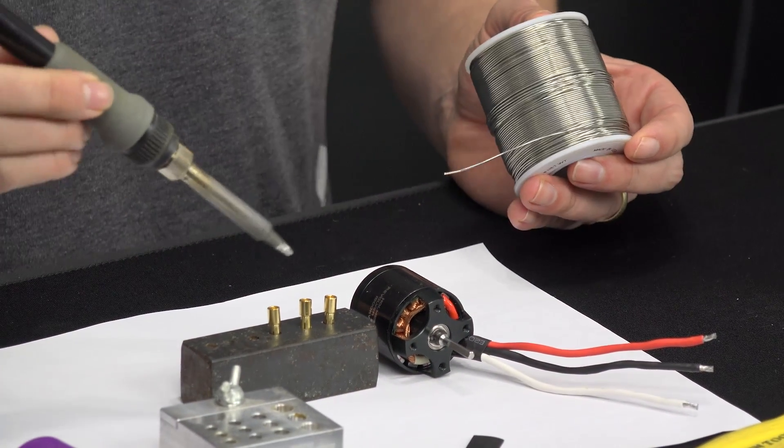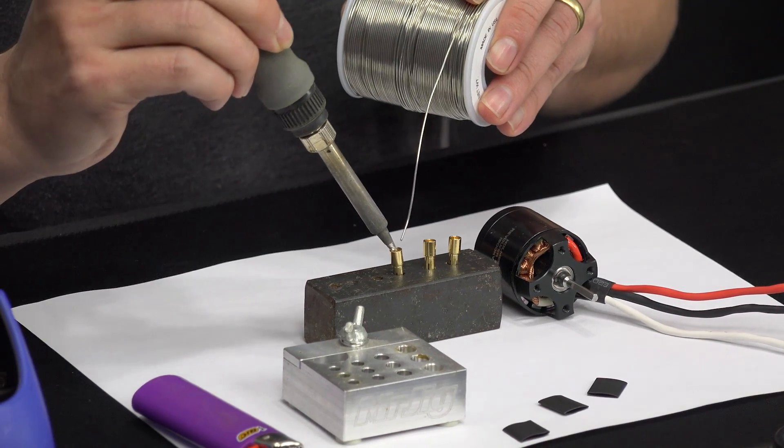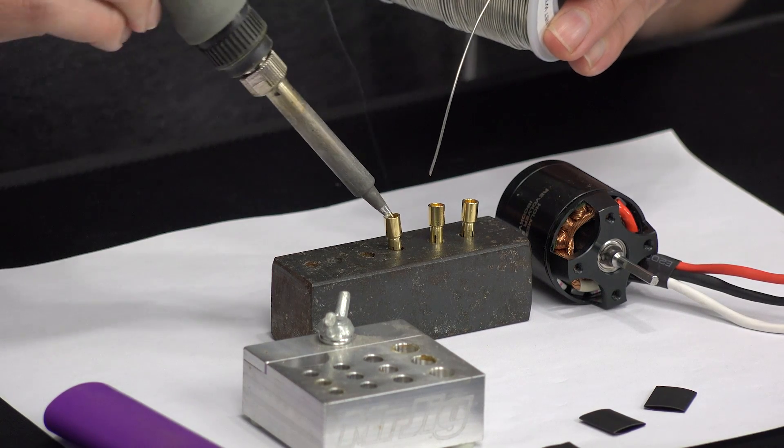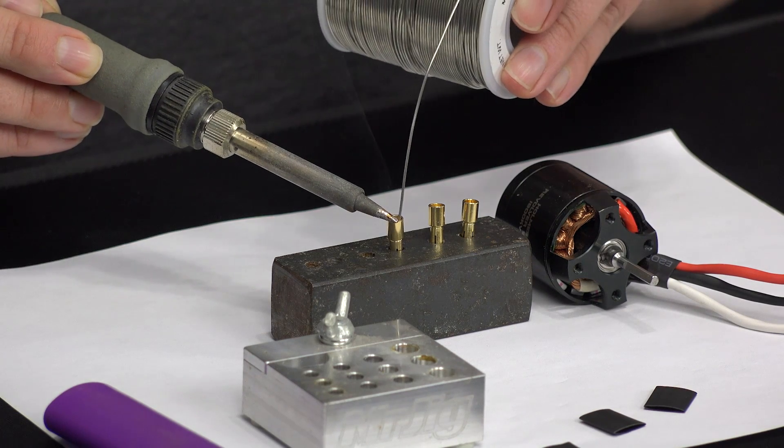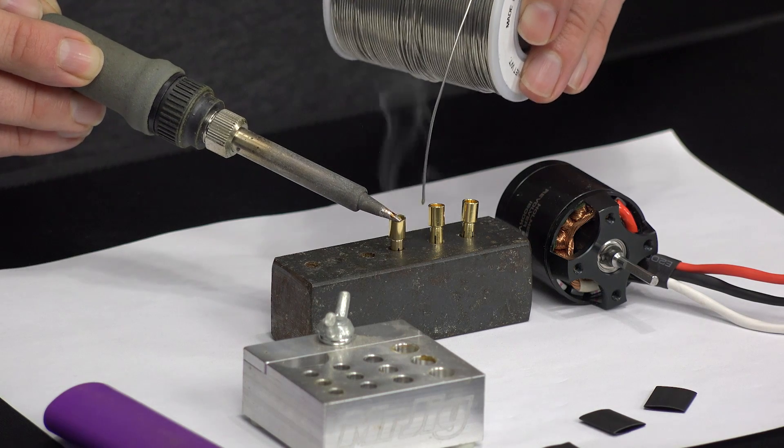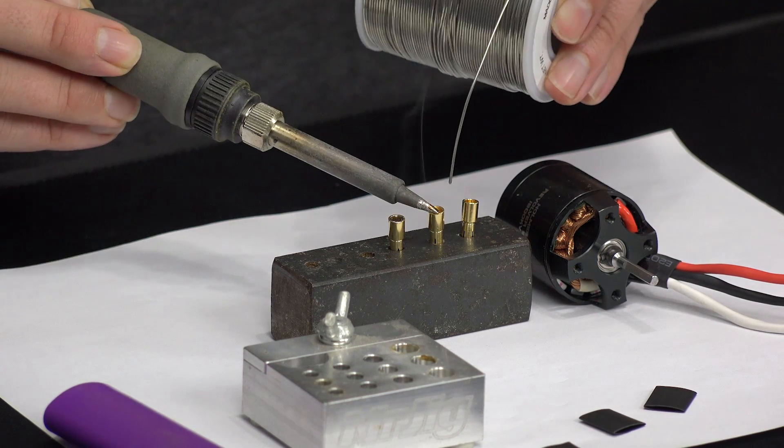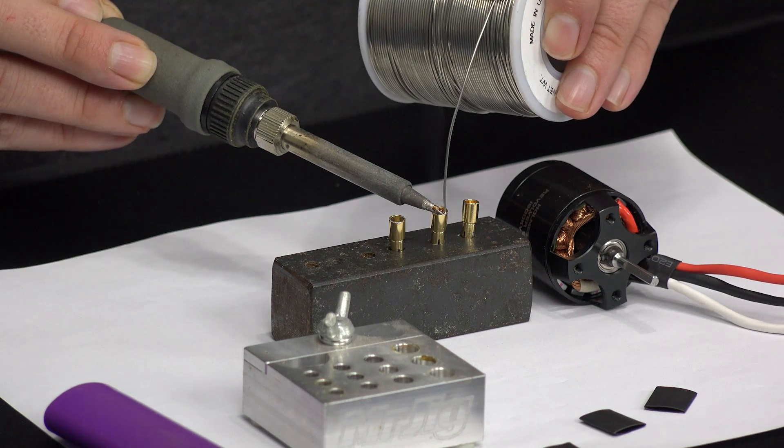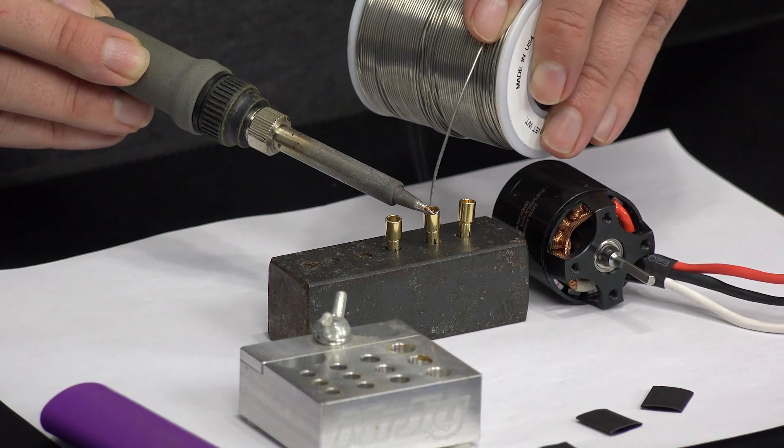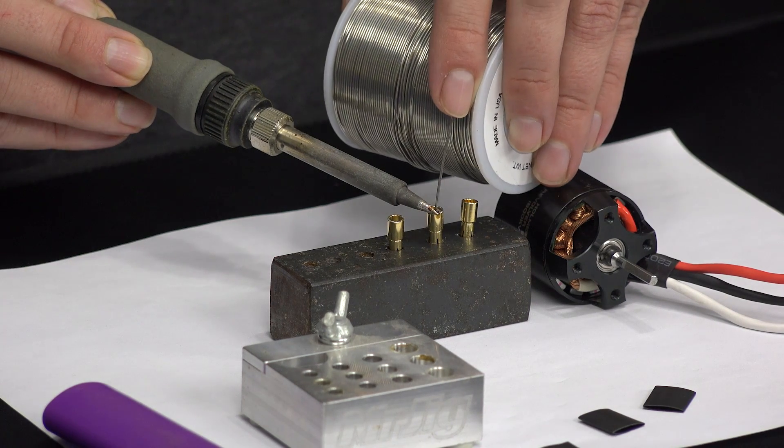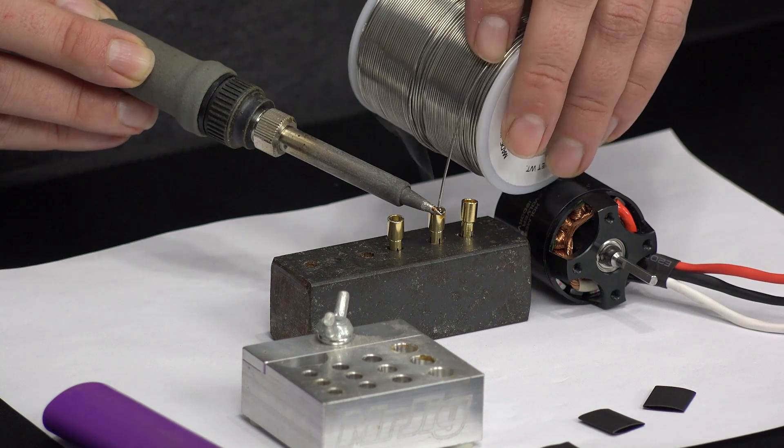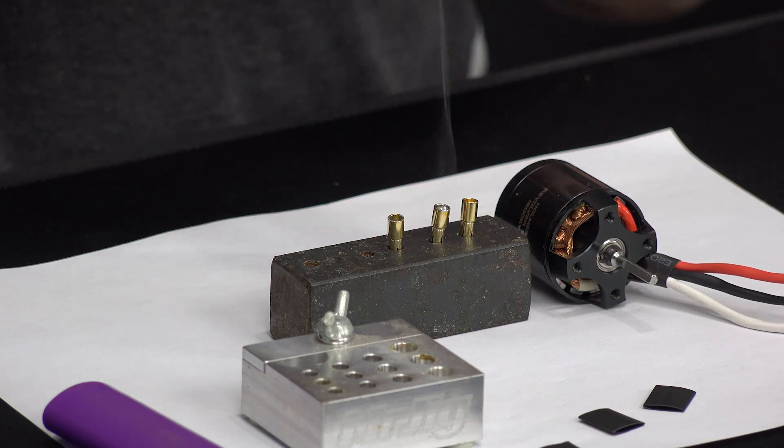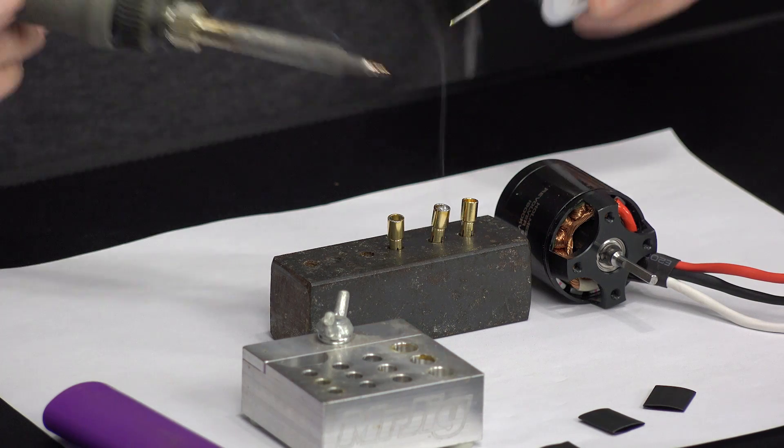All right, so the first thing we want to do is pre-tin all of our joints. So I am going to heat up these bullets, and we stick solder in between the iron and the bullet itself. We're trying to get a little heat transfer. There we go. So I am just going to pull a little solder in there, and normally I would be doing this in front of an exhaust fan. As you can see, once we get the heat transfer going, I am not actually adding the solder to the iron tip. I am adding the solder to the bullet plug.